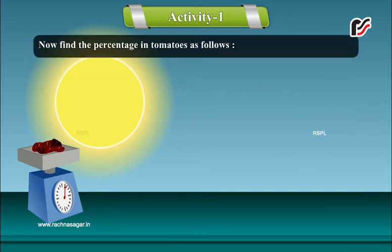Now find the percentage in tomatoes as follows. Percentage of water equals x minus y divided by x into 100.